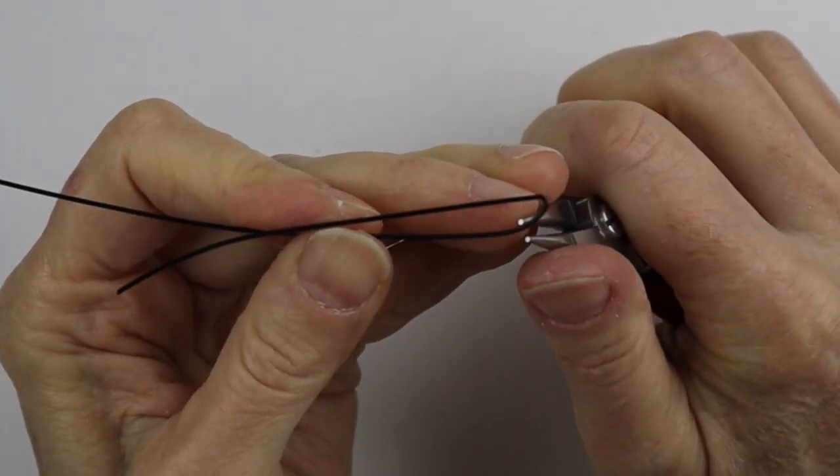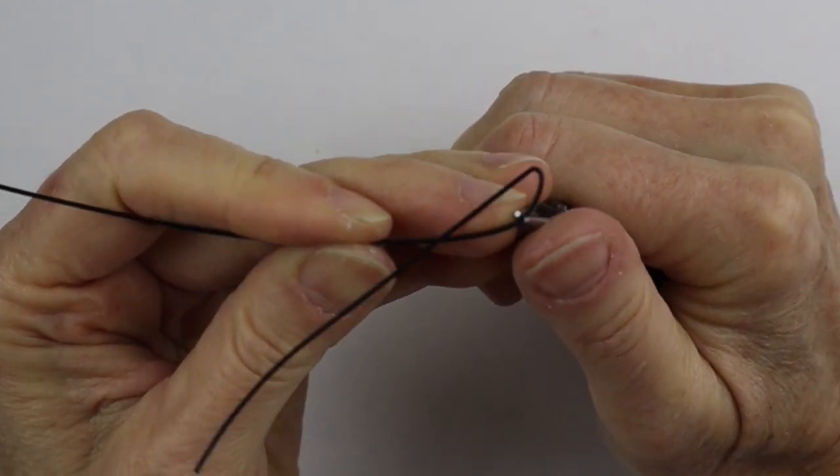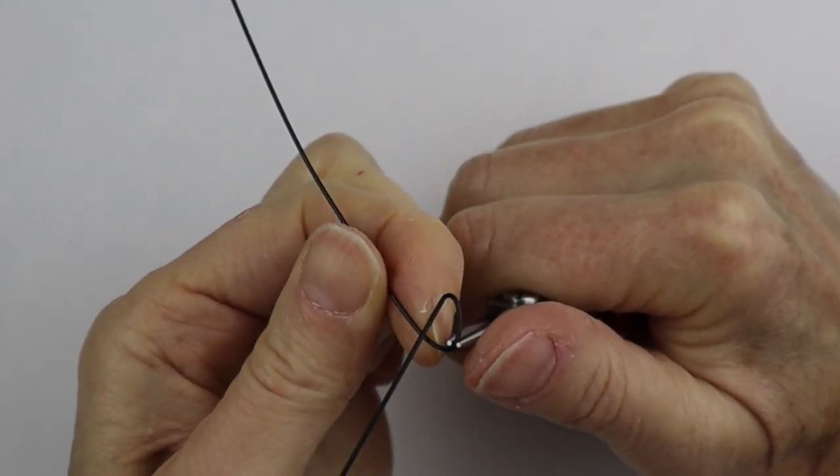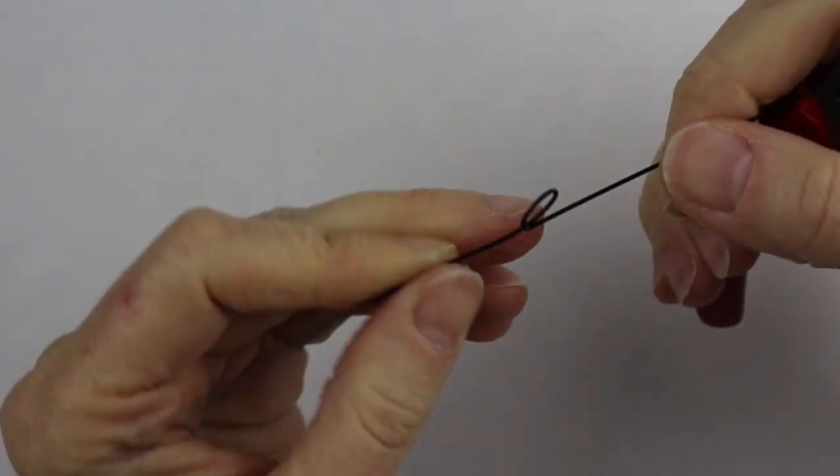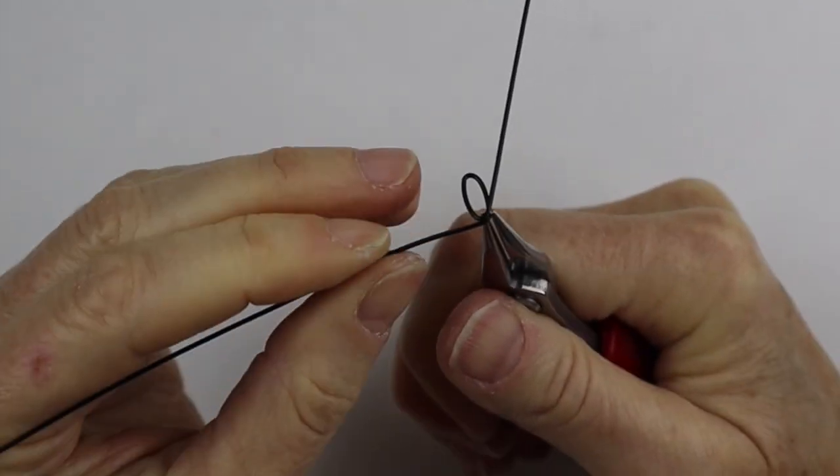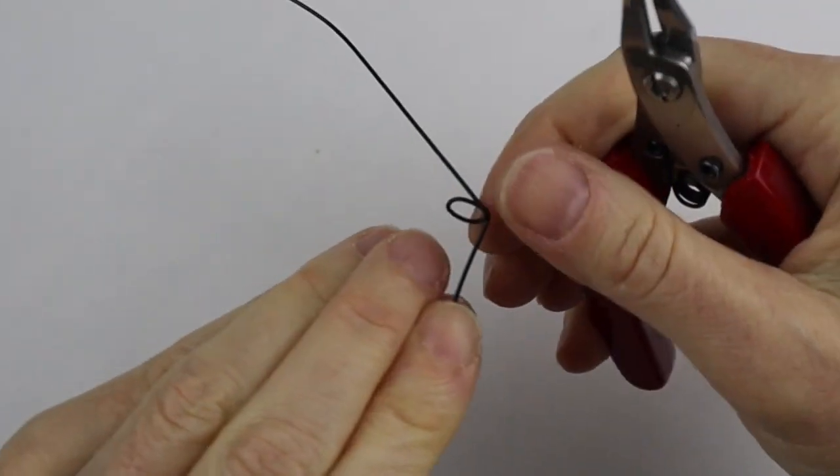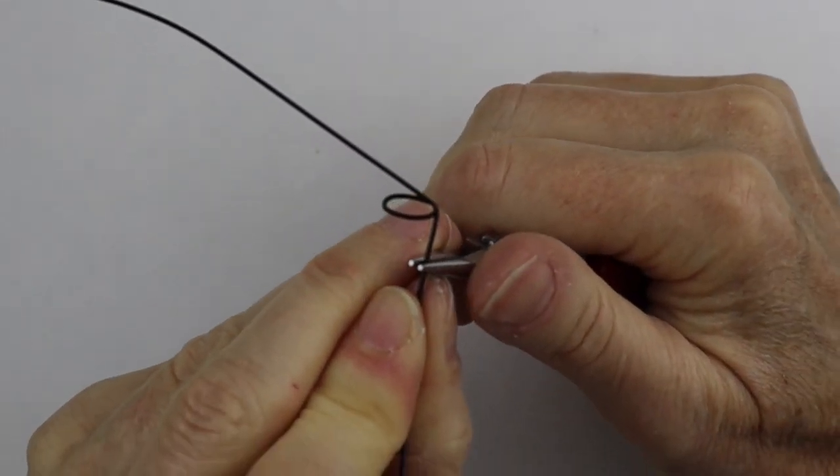You can just use your finger to kind of form the top shape of the cup. This is going to depend on how large you want the ring. I'm going to make it kind of a medium size. Pinch that there and with your finger form a kind of little oval shape here.